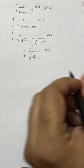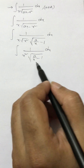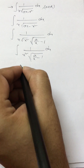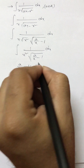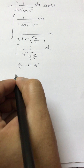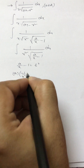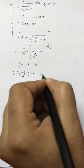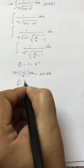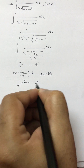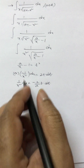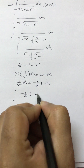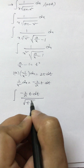Now this is reducible. If we consider a/x minus 1 as t squared, this whole expression will become manageable. So let t² = a/x − 1. Differentiating: the derivative of a/x is −a/x² dx, and the derivative of 1 is 0, giving us 2t dt. Therefore, 1/x² dx equals −2/a · t dt.